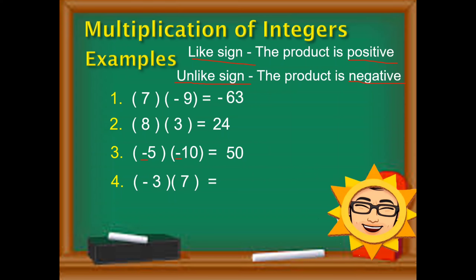Let's work on the fourth example. Tingin ulit tayo sa sign — magkaiba. Isang negative: negative 3, at isang positive: positive 7. So pag minultiply natin yung number, that's 21. Pero dahil magkaiba ng sign, negative 21. So negative 3 times 7 is negative 21. The fifth example is negative 8 times negative 9. Laging tignan agad ang sign — magkaparehas. So immediately, positive ang sagot. 8 times 9 is 72. So negative 8 times negative 9 is 72.